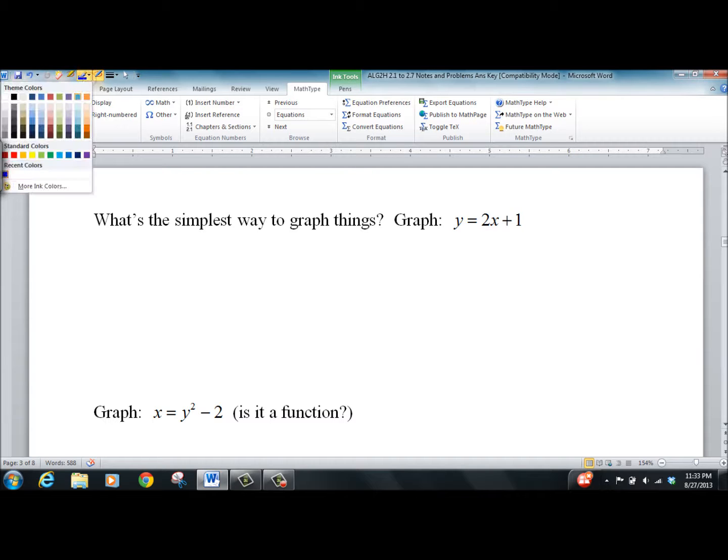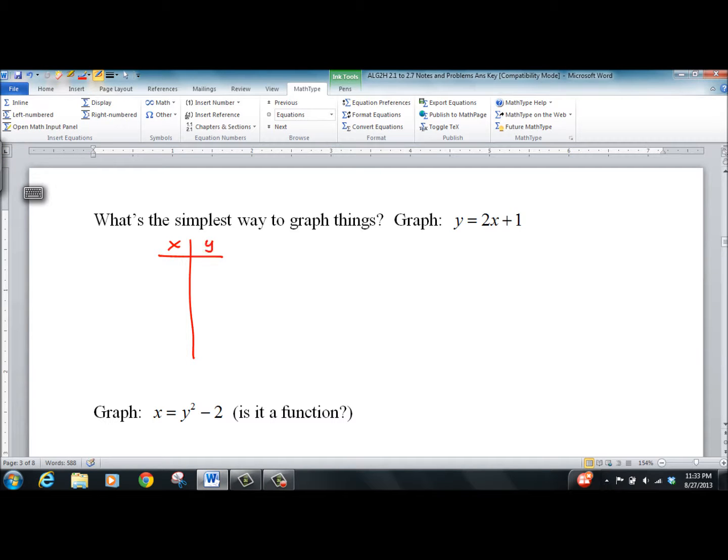So, simplest way to graph things, I would say with slope. But most math teachers would say, oh, you do your table. Which we'll do one or two times, and we'll get away from it as fast as we can. So you plug in negative 1, you get negative 1. Plug in 0, you get 1. Plug in 1, you get 3. Plug in 2, you get 5. Let's go to your coordinate plane and get used to doing this very quickly.